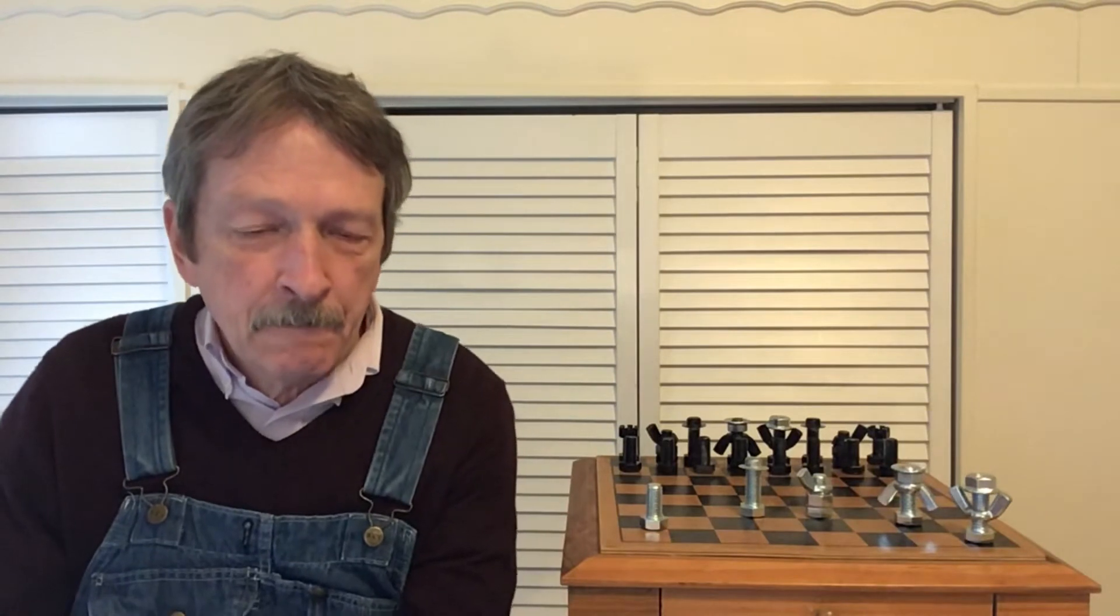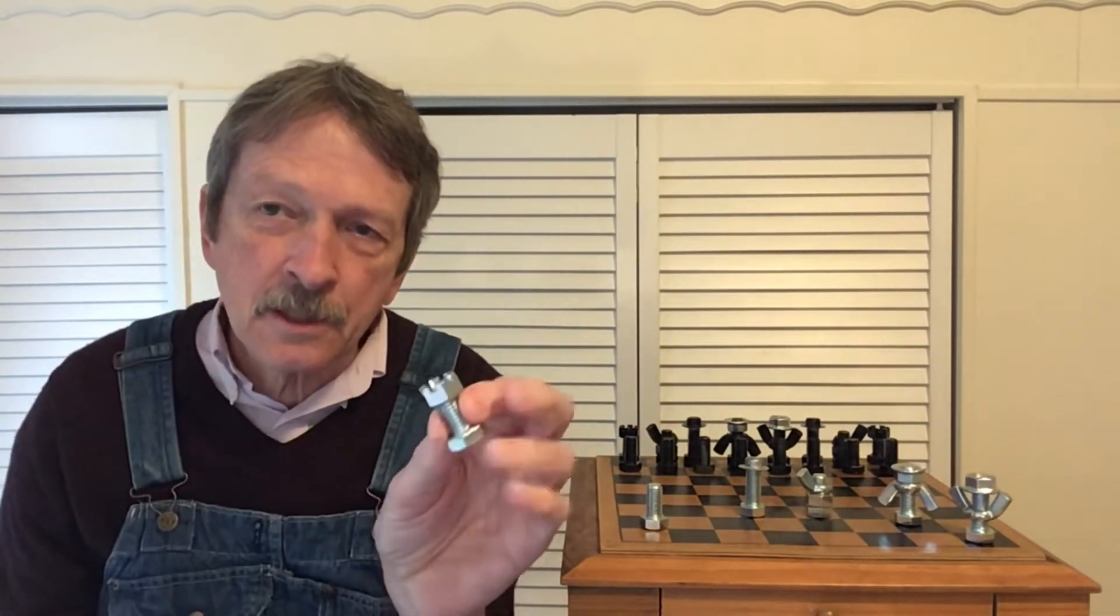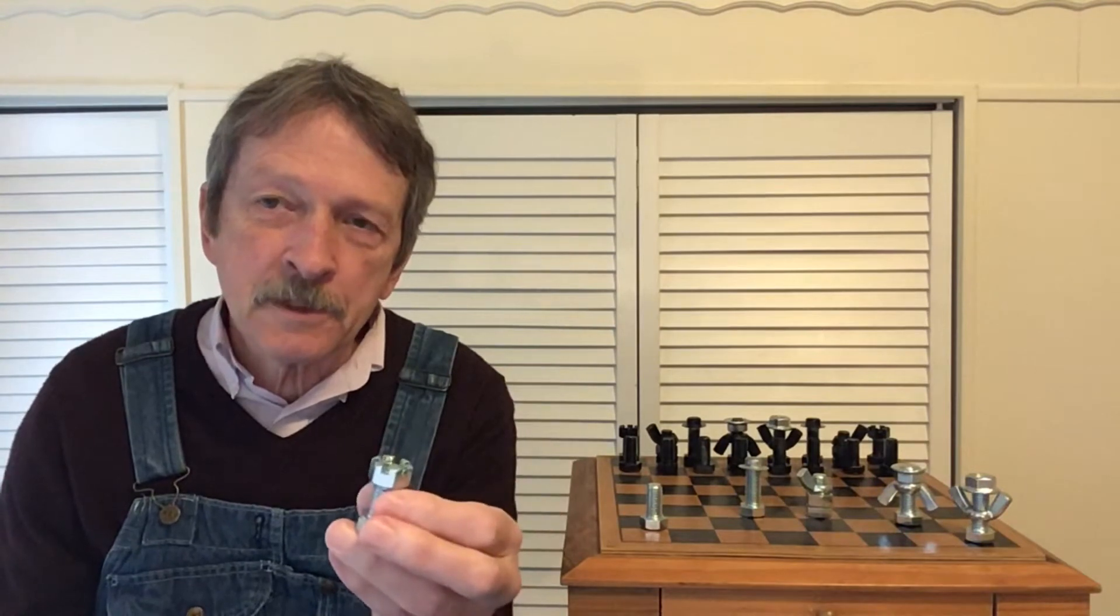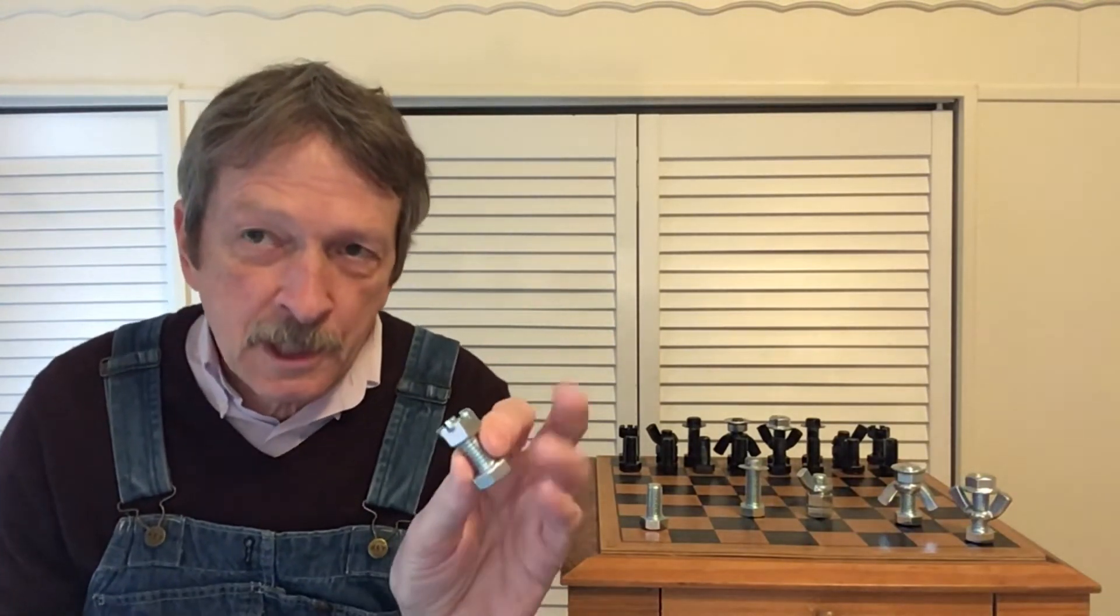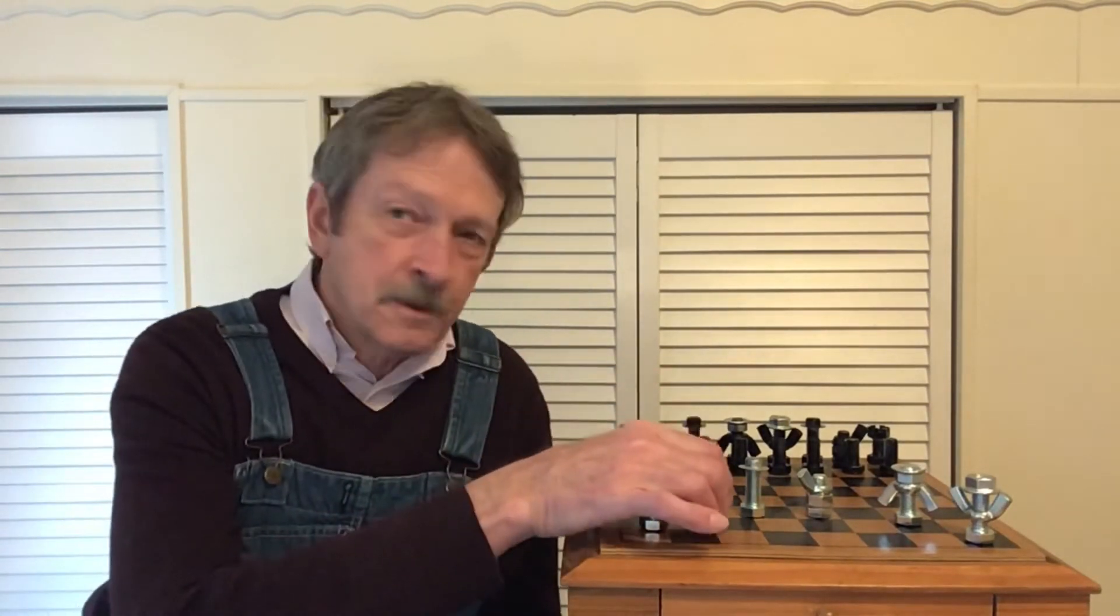And a castle nut. So I put a little dab of thread lock seal on before I screw the hex nut on. And that keeps it from coming unscrewed. And we don't want him losing his helmet during the game you know. So that's the rook.